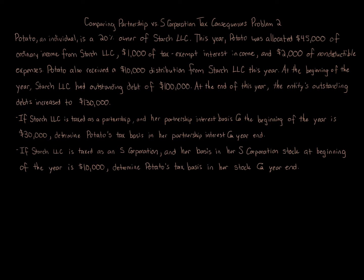Comparing Partnership vs. S-Corporation Tax Consequences, Problem 2. Potato, an individual, is a 20% owner of Starch LLC. This year, Potato was allocated $45,000 of ordinary income from Starch LLC, $1,000 of tax-exempt interest income, and $2,000 of non-deductible expenses. Potato also received a $10,000 distribution from Starch LLC this year.